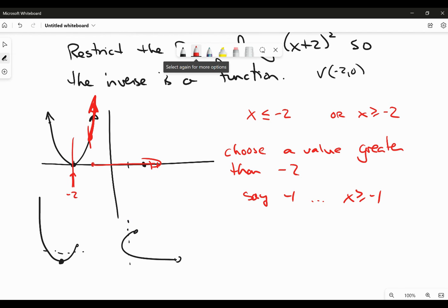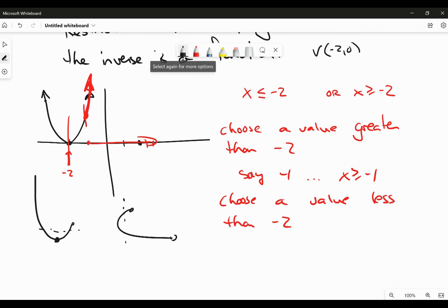Now, on the other hand, if I choose a value less than -2, and I'm free to do that, let's say, for example, I choose -3 just because it's easy. Then what I've got to do here...